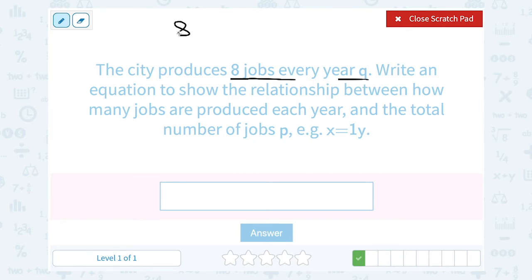Eight jobs every year for Q number of years. We'd multiply that together. And when we multiply that together, it would be equal to the total number of jobs created. They said the total number of jobs was P. So P is equal to eight Q.